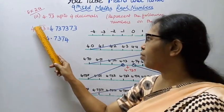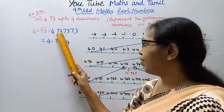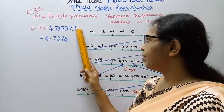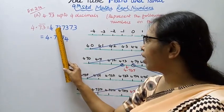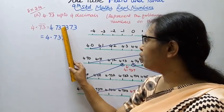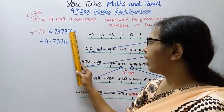4.73 bar, 4.73 bar up to 4 decimals. 4 decimals represent on the number line.